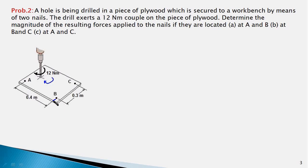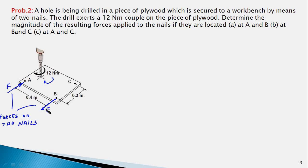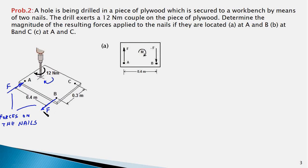A force F is exerted on the nail at point B, and a force of the same magnitude but opposite direction is exerted on the nail at point A. These forces are equal in magnitude, opposite in direction, and their lines of action are parallel, so they form a couple. The moment of this couple equals the moment exerted by the drilling machine: 12 newton-meters.